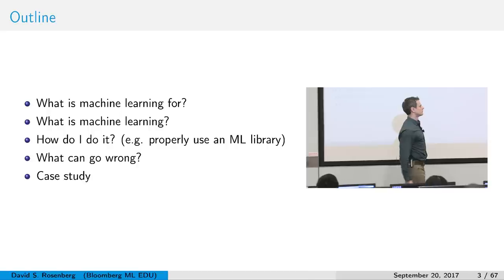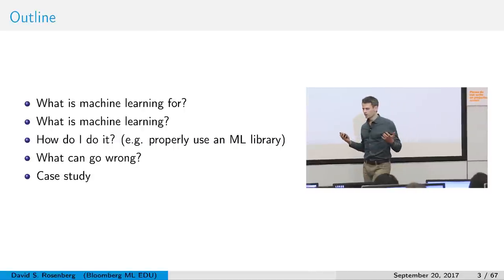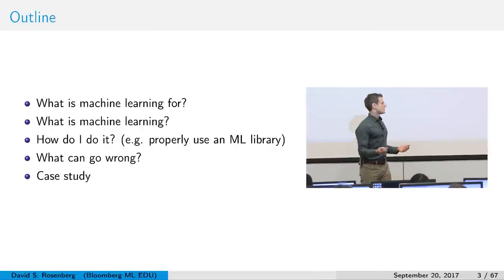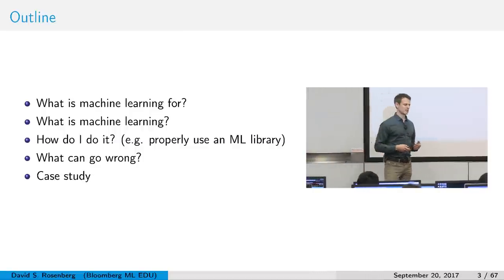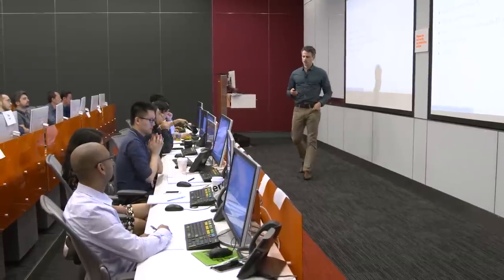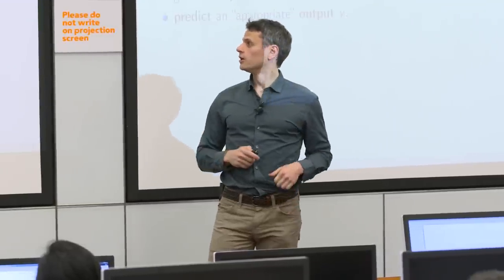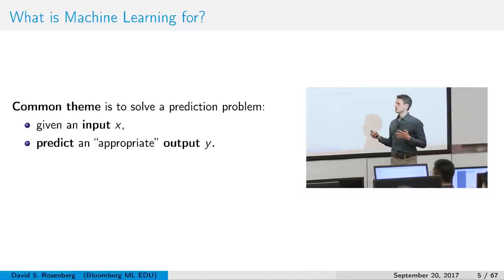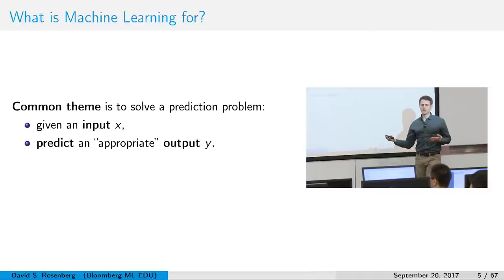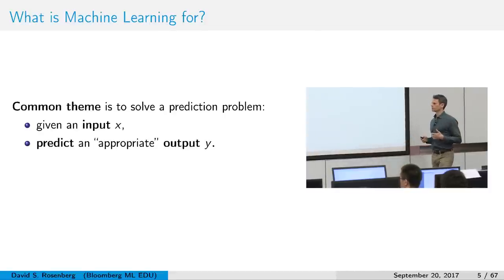Here's a brief sketch of today's schedule: first, we'll talk about what machine learning is for, then what machine learning is, then how you do it, and finally what can go wrong. Then we'll do a case study where you can brainstorm an approach to an interesting machine learning problem. The common theme of machine learning problems is that we give some input x and want to produce some appropriate output y — that's the general structure. It's prediction.